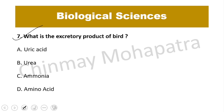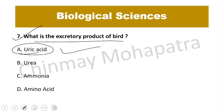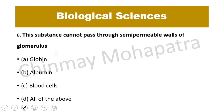Question number 7: What is the excretory product in birds? The right answer is uric acid. Uric acid is the excretory product in birds, as well as in water and terrestrial insects.